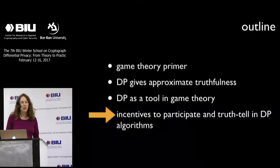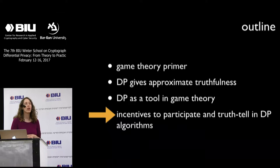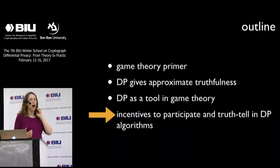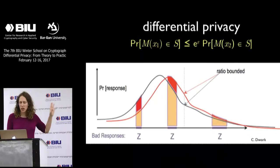As promised, the second half of the discussion this afternoon is going to touch on questions of how can we incentivize people to participate in differentially private mechanisms, how can we get them to truth-tell, how should we compensate them, and how do we think about the value of privacy. This is going to be a survey talk where I try to give you a sense of some of the ways that the literature has been grappling with these issues and some of the things we still don't understand very well.